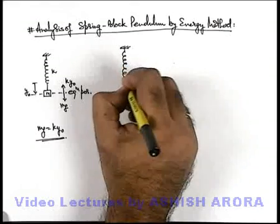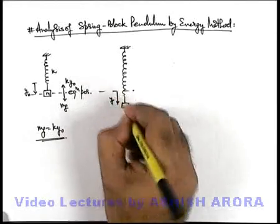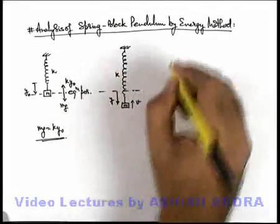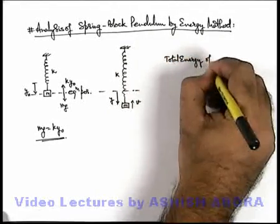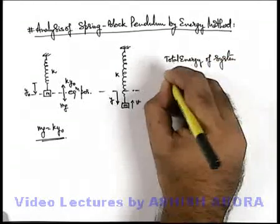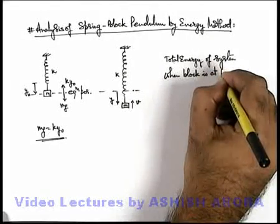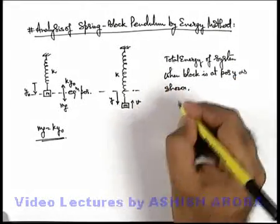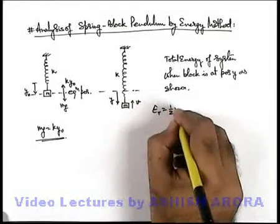And during oscillations say we consider the body at an intermediate position where it is at a further displacement y from mean position, below the mean position. And say it is moving up with a speed v. In this situation if we write the total energy. Total energy of system when block is at position y as shown, we can directly write the kinetic energy of block in this situation as it will be ½mv².